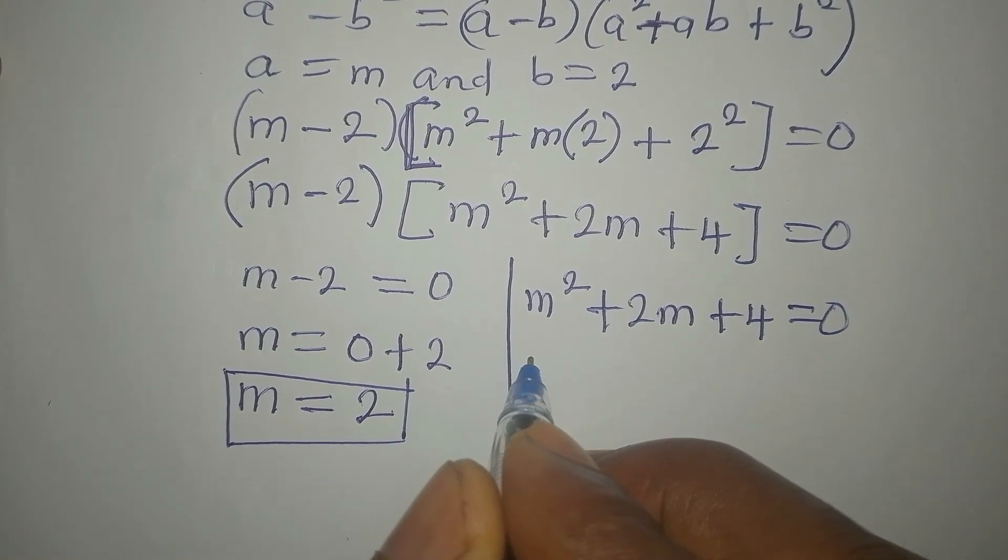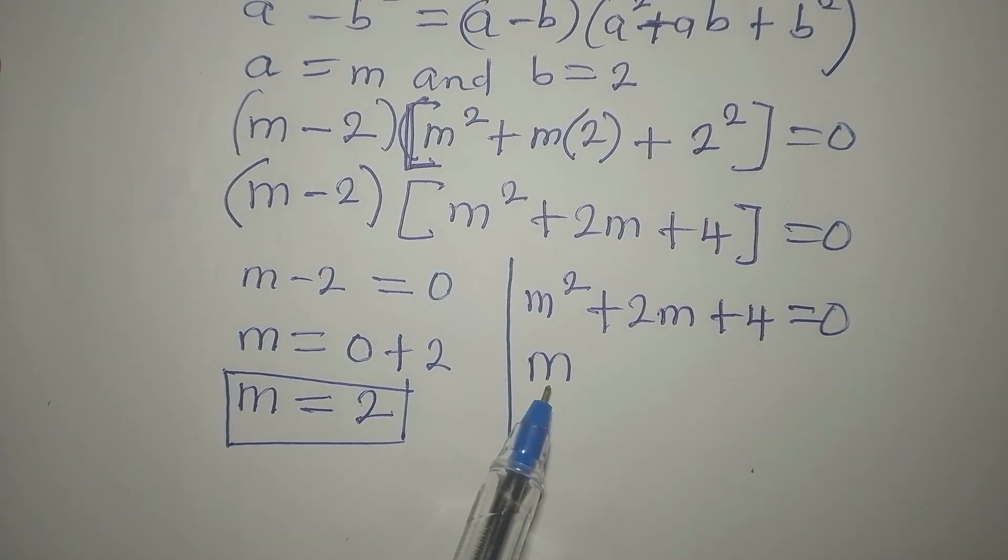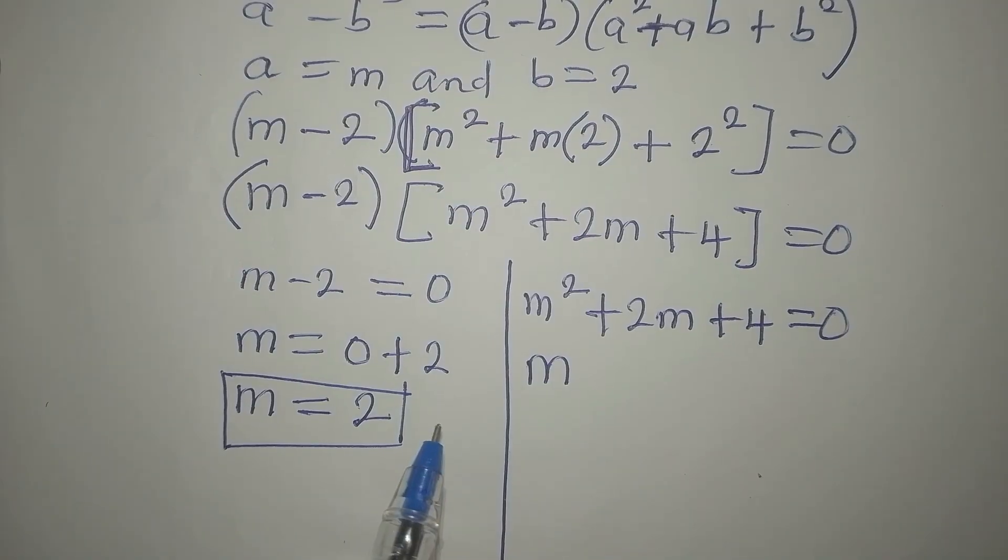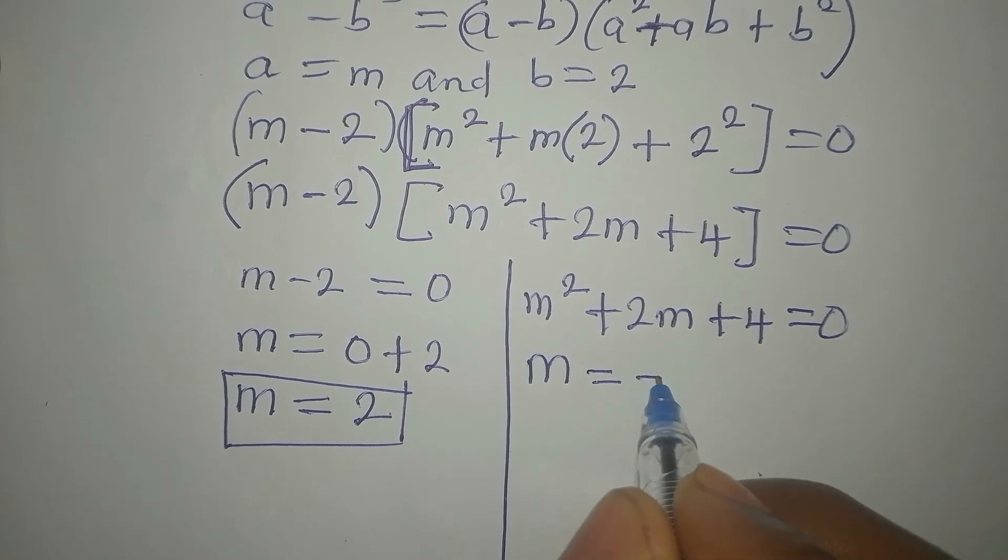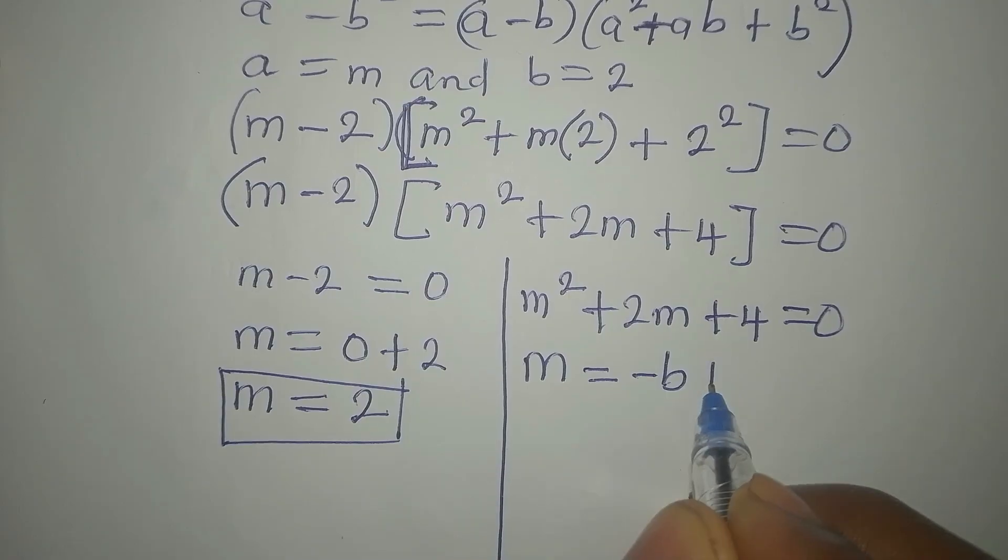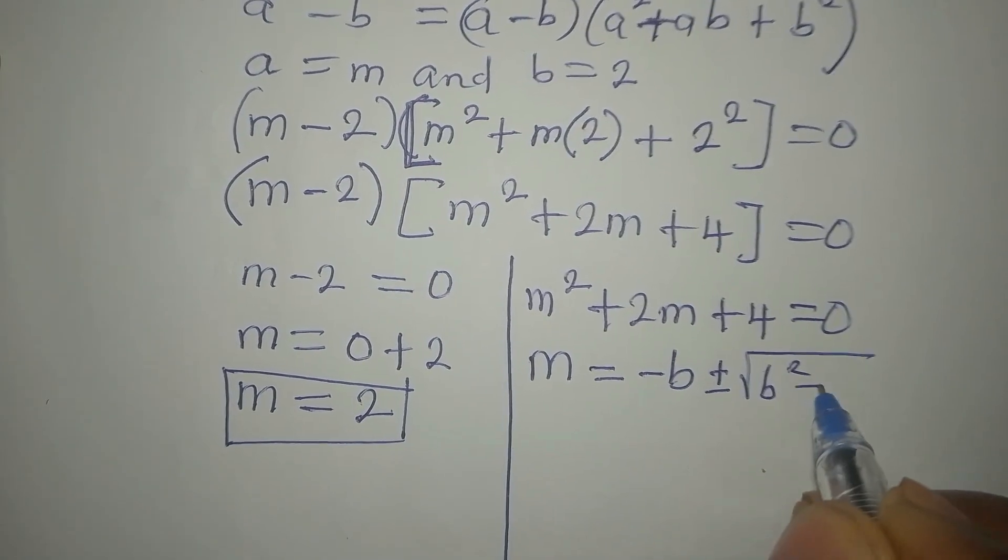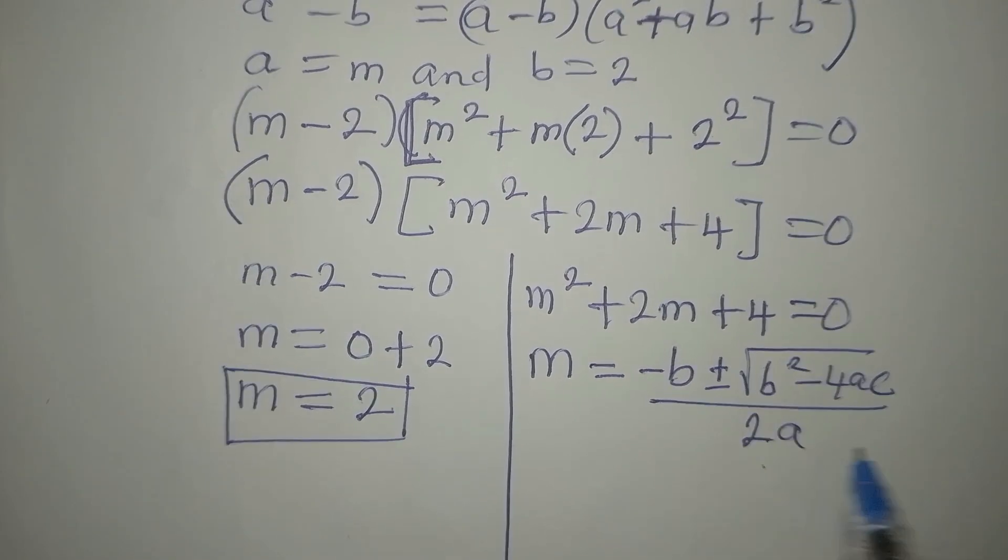So your quadratic formula is m becomes a subject if it is what you are finding in the quadratic equation. So we are looking for m. It will now be minus b plus or minus square root of b squared minus 4ac. Then we divide all this by 2a.